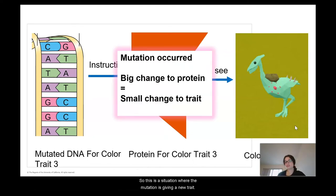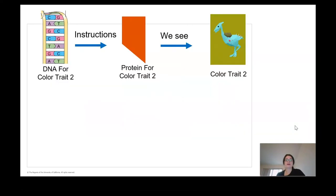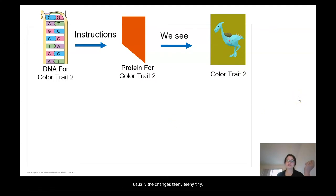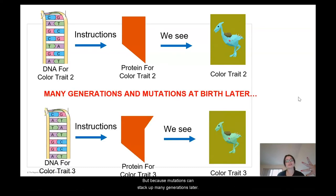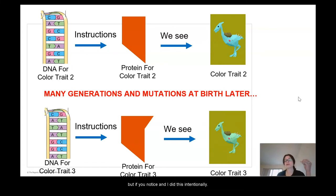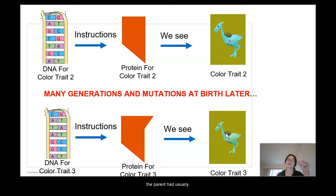This is a situation where the mutation is giving a new trait. Long story short: we have mutations happening all the time, but usually the change is teeny tiny. Because mutations can stack up, many generations later you can get a mutated protein and a mutated trait — but that mutated trait is usually only a little bit different from what the parent had.